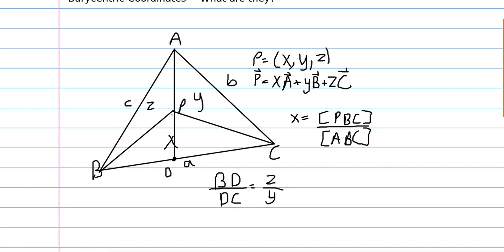Now, for a given point P, we denote the coordinates of this point as x, y, z. Each of these coordinates is equal to the ratio of the area that the point makes with one of the sides to the entire triangle's area. The point divides the triangle into three different areas x, y, and z, so the sum of these ratios has to equal one. So x plus y plus z will equal one.